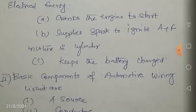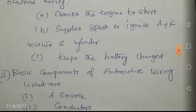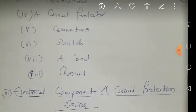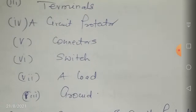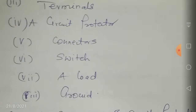Now let us talk about the basic components of the automobile wiring circuit. A wiring circuit is needed for the continuous flow of electrical energy through the wires. The major components of automotive wiring circuits are: a source, conductors, terminals, a circuit protector, connectors, switches, a load — without a load it cannot function — and a ground, where the electrical energy returns after being delivered.